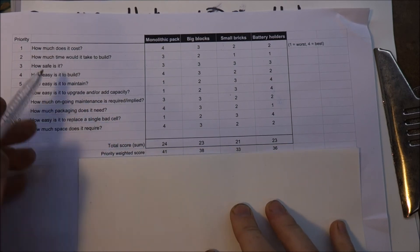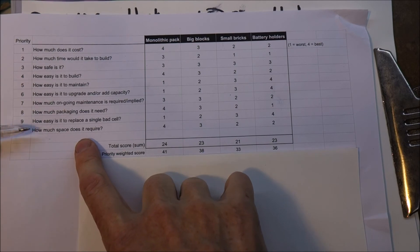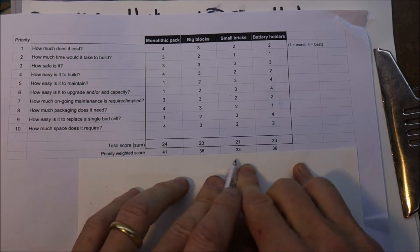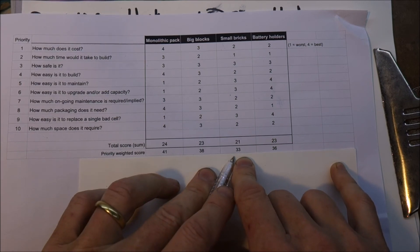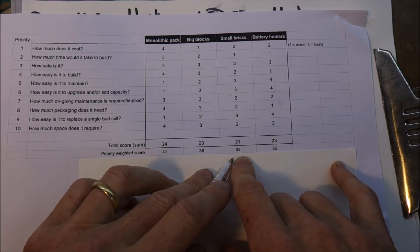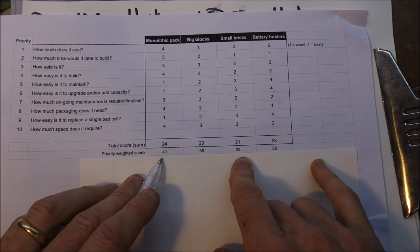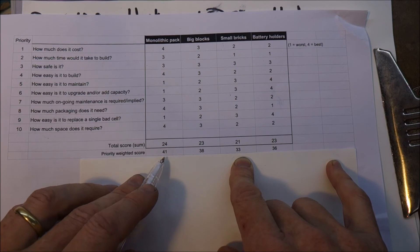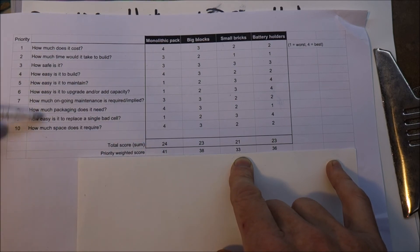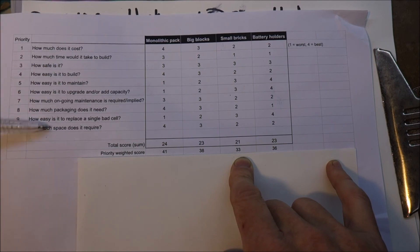Even then I went to priority rated them, so this was worth twice as much as these, and that came out even less the way I wanted. It says that the four blocks design is the worst of the four options, and my monolithic pack setup is the best, for my priorities and my list of questions.